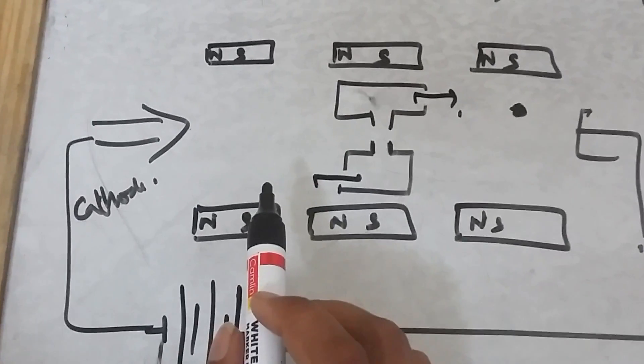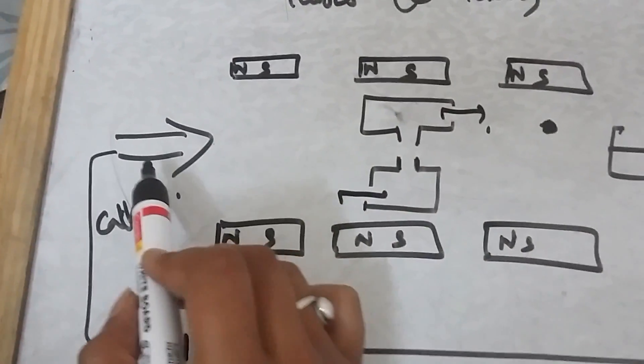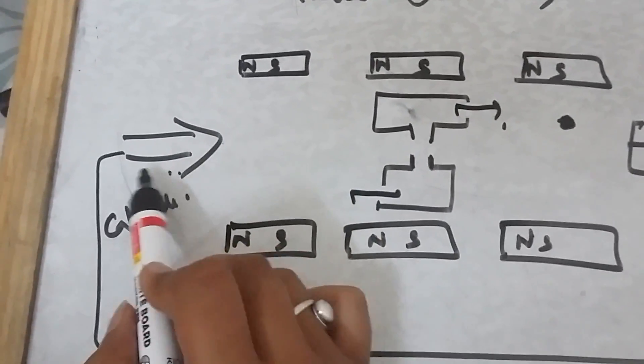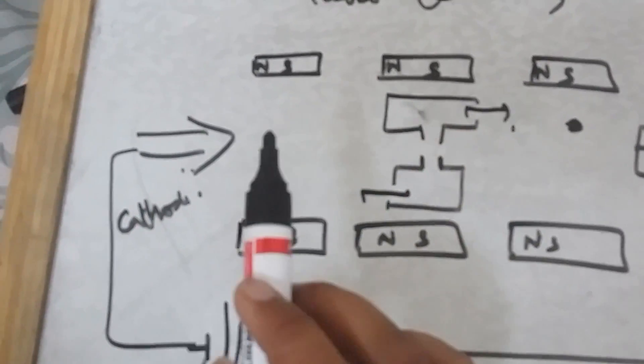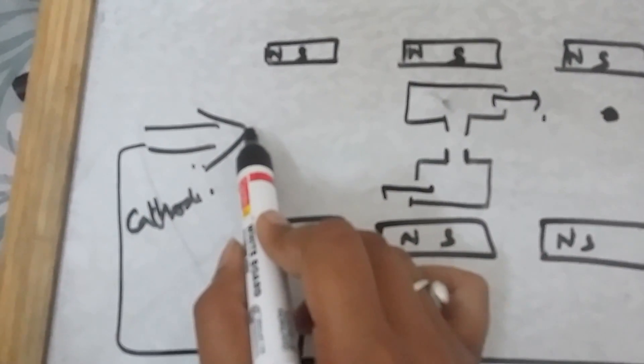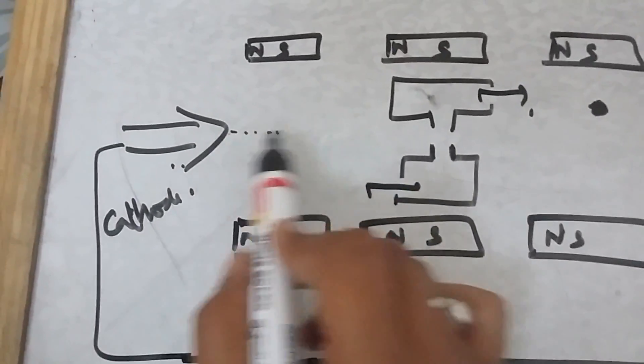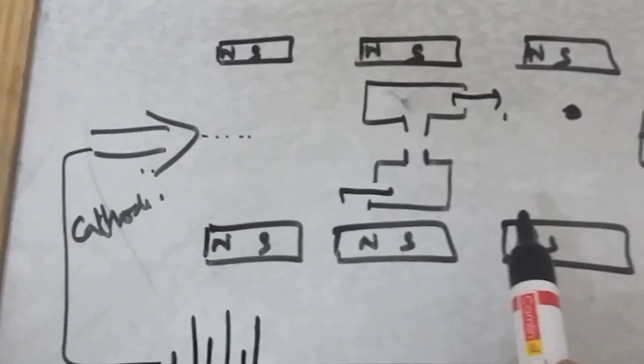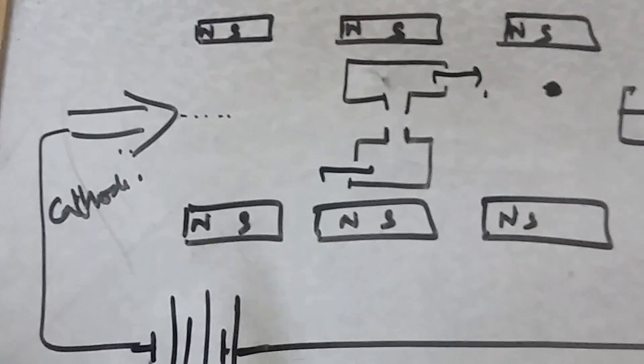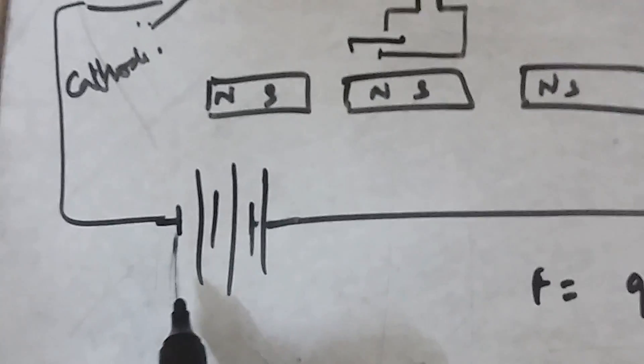In linear beam tubes, this is the structure. Here is the electron gun - the cathode tube which is heated and provided with potential difference between the cathode and the anode. From here, the electrons emit and get collected. This is the potential difference applied between the cathode and the anode.